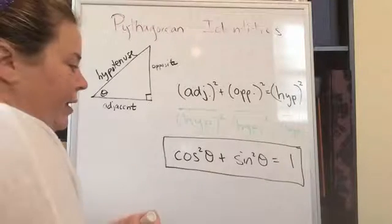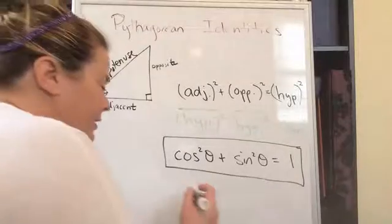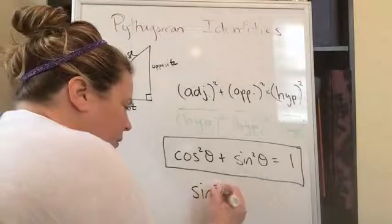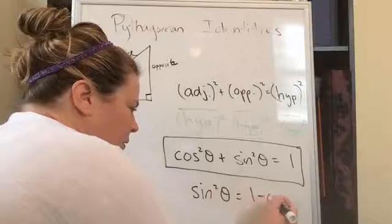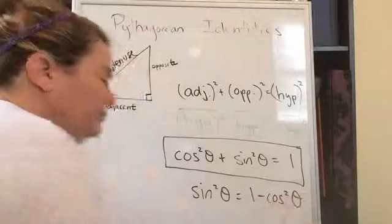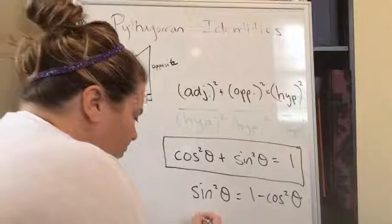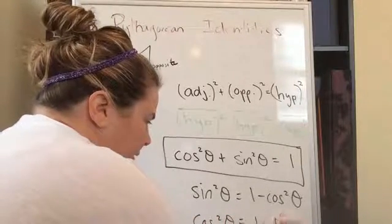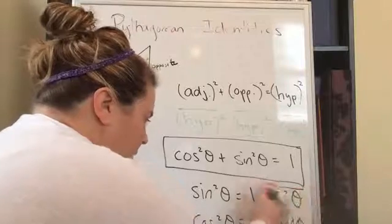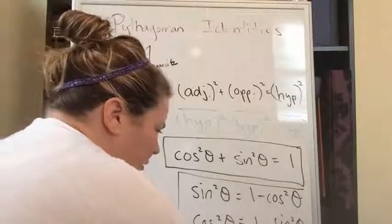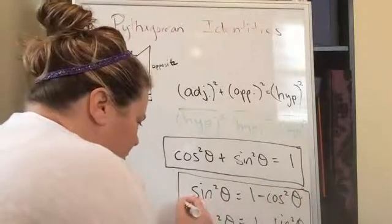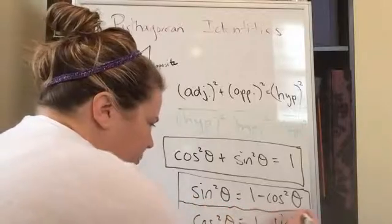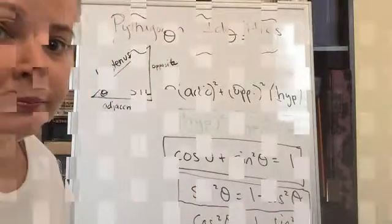Let's see, we have, what if you wanted to get sine squared by itself? You could subtract cosine squared to the other side, or if you wanted to get cosine squared by itself, you should subtract sine squared to the other side. So these are two other forms of this identity that you should probably know. Okay.